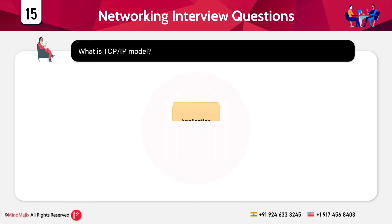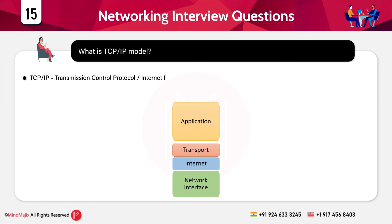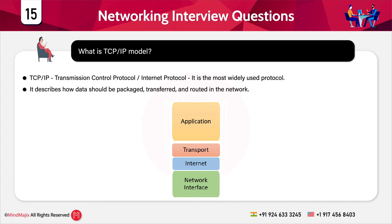The next question is: what is the TCP/IP model? TCP/IP stands for Transmission Control Protocol and Internet Protocol — it is one of the most widely used protocols in networks. It describes how data should be packaged, transferred, and routed. The TCP/IP model layers are: application layer, transport layer, internet layer, and network access layer. In interviews you may also be asked the differences between the OSI model and the TCP/IP model.